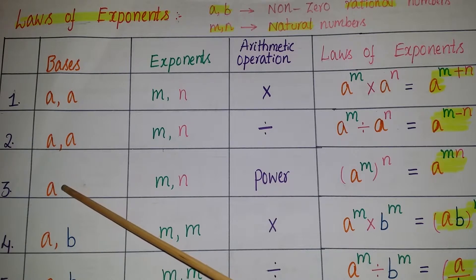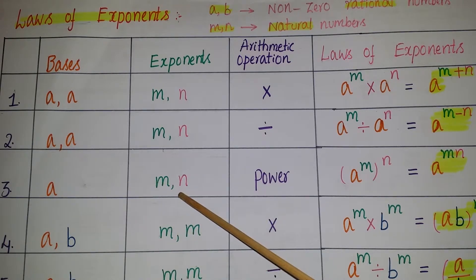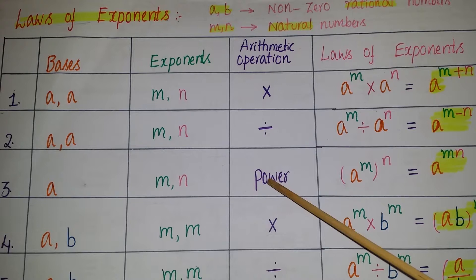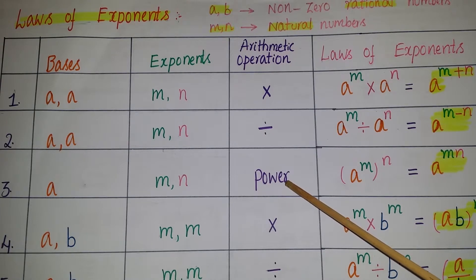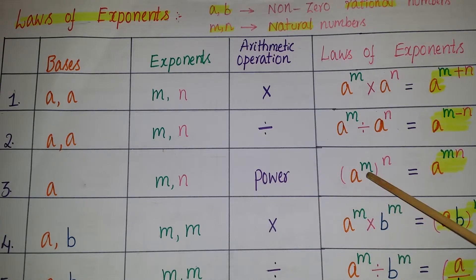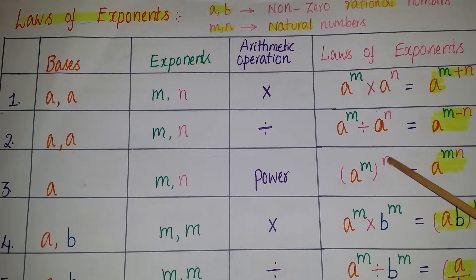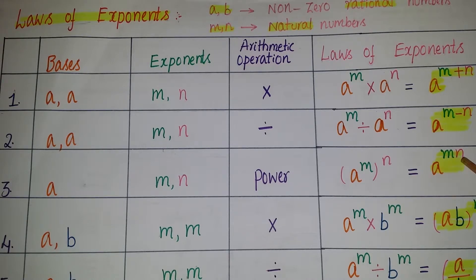The third law: if the base is a and the exponents are m and n, and we use the power of a power, then a to the power of m, whole to the power of n, is equal to a to the power of mn. Here we are multiplying the exponents.